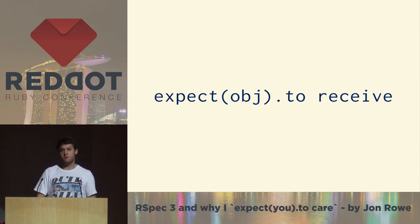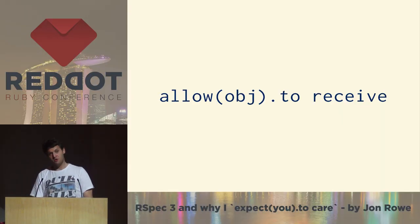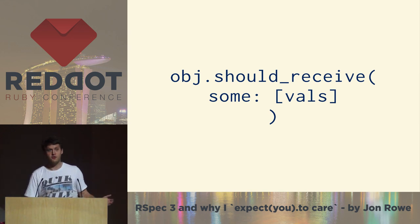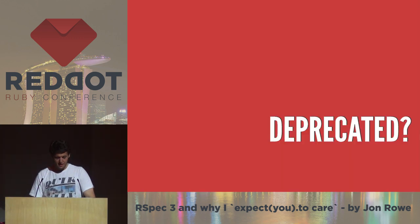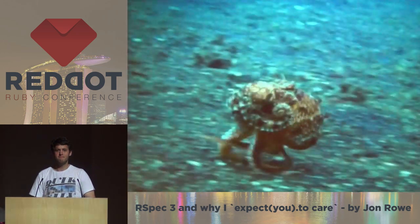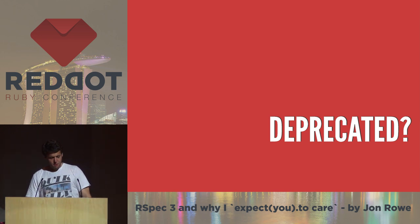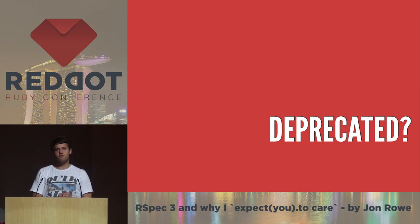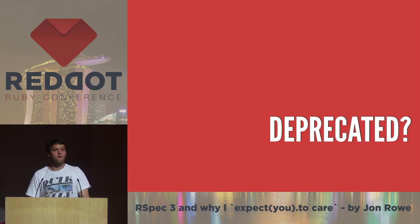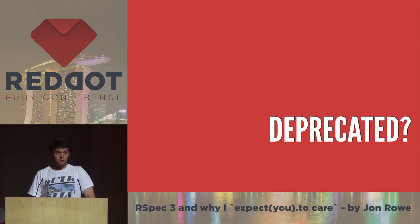So object.shouldReceive becomes expect object to receive. Object.stub becomes allow to receive. We initially weren't going to replace this syntax, but we had people complaining, so we have given you receive messages. And we've had a lot of people complaining about should being deprecated. A fun fact about should being deprecated - it's not. What's happened with RSpec 3 is that we deprecated the usage of should automatically. The big scary warning message it creates forces people to think it's deprecated. I should actually apologize for that - that's something we slipped up on. We didn't think that people would just see 'should deprecated' and not read the message. And it's caused a lot of people to switch to expect, which we like.